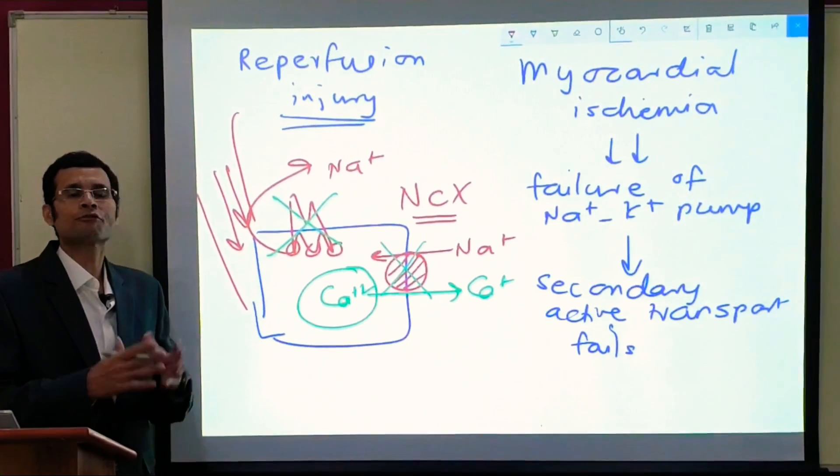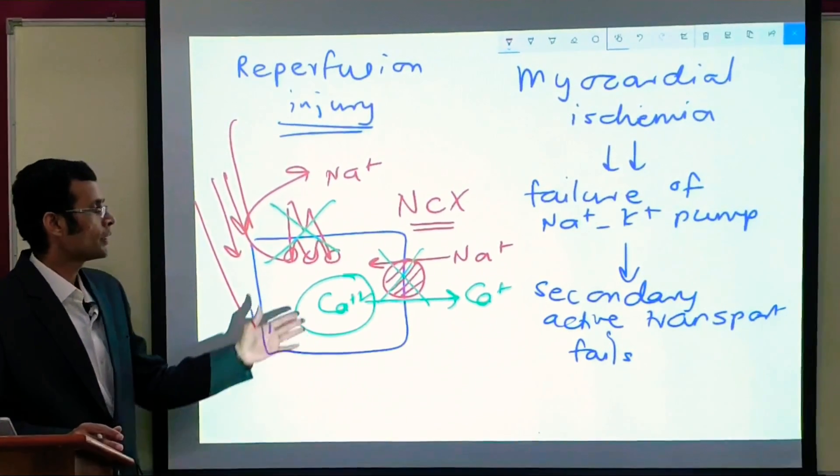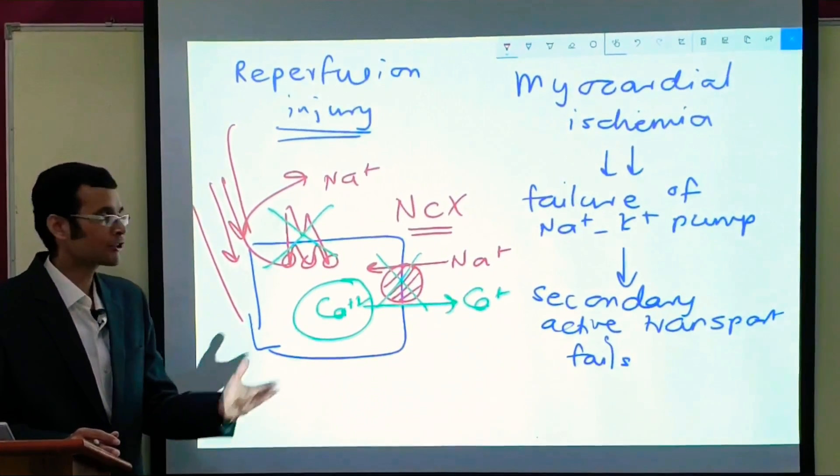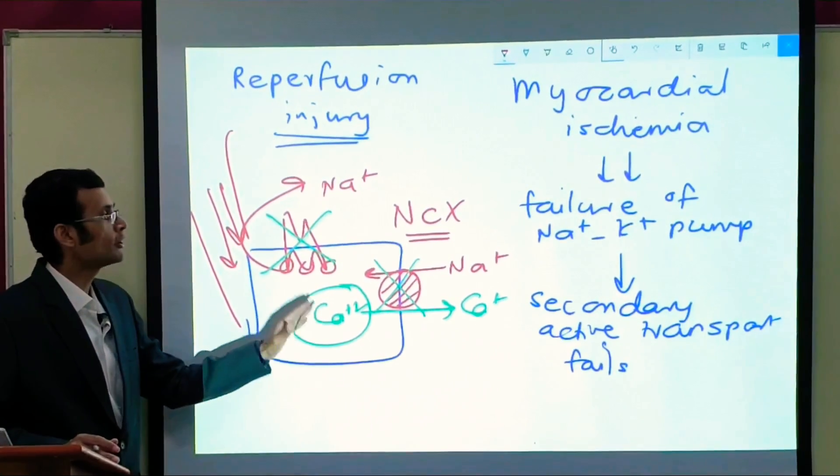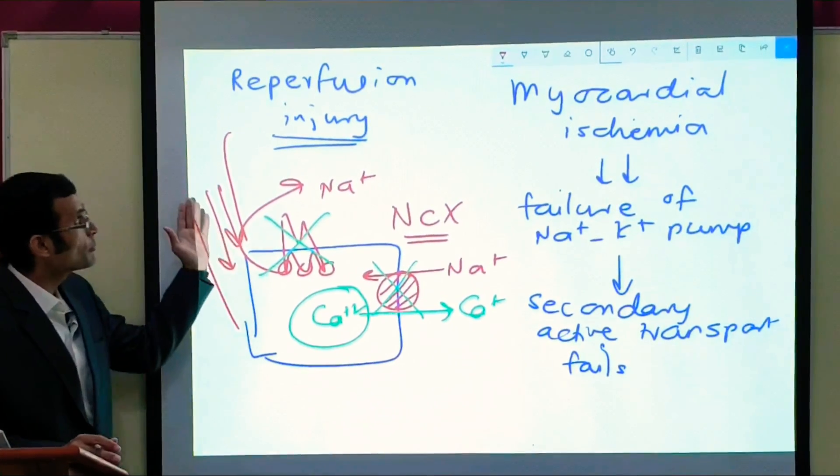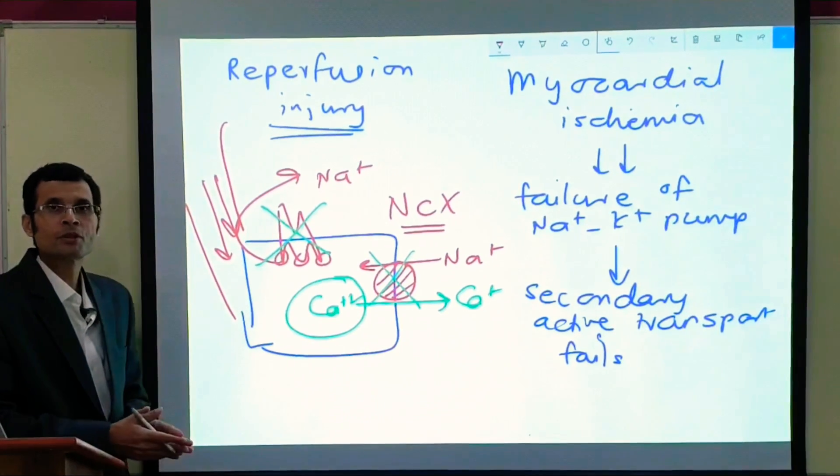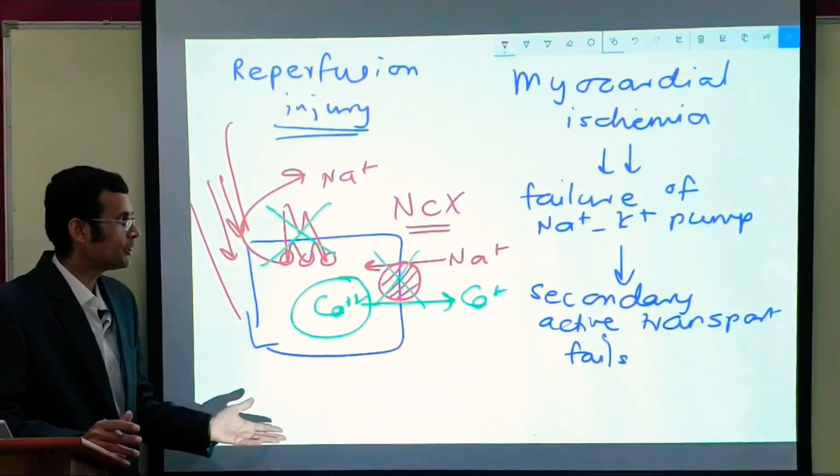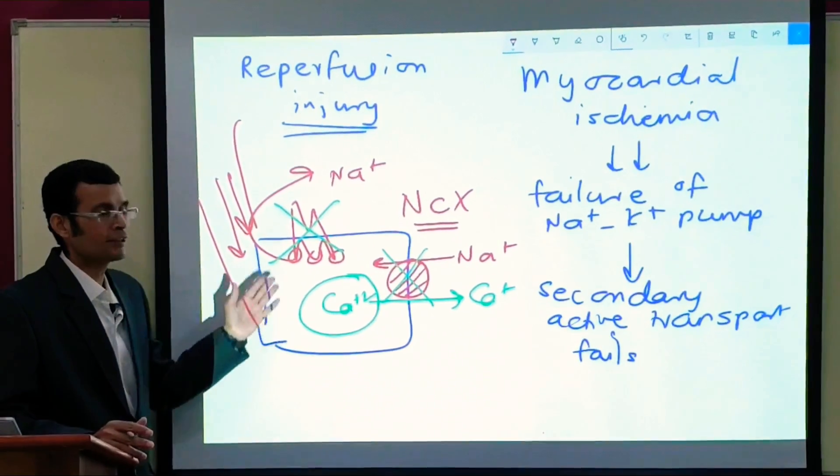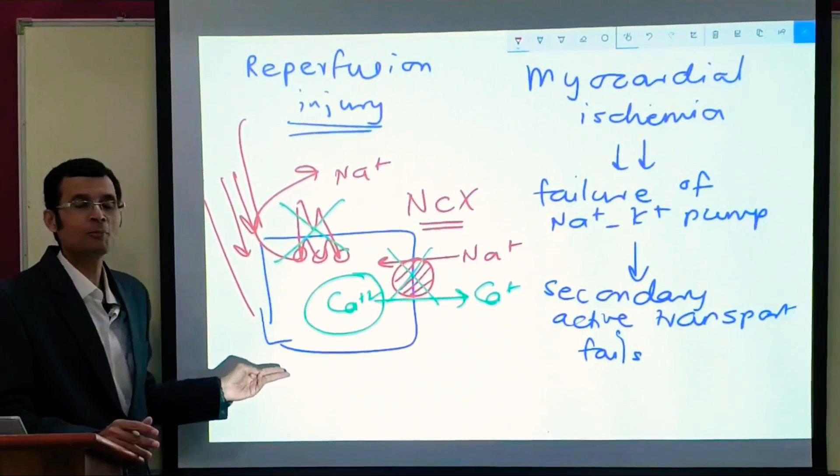Already the fiber was friable and weak. The strong contraction that follows will cause further damage. So perfusion getting re-established, the reperfusion should have done something good but instead it has caused further damage because of this accumulation of calcium.